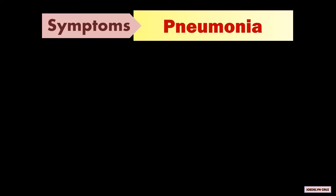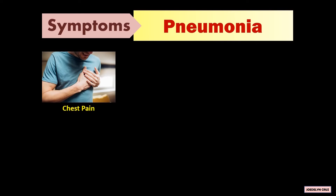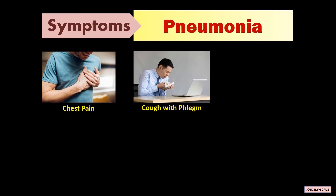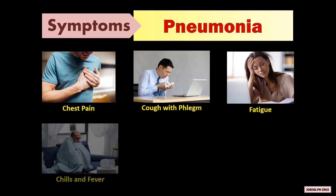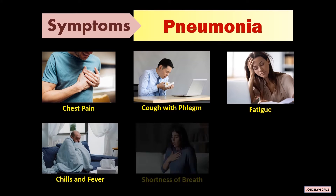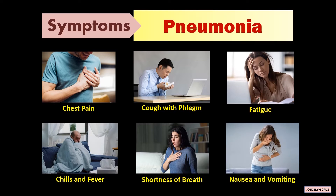The symptoms of pneumonia are chest pain, cough with phlegm, fatigue, chills and fever, shortness of breath, nausea, and vomiting.